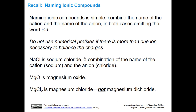Magnesium chloride illustrates another point. Here we have our magnesium cation. We require two chloride anions to balance out that charge, so this is the correct formula — two chloride anions, one magnesium cation — but we still just call it magnesium chloride. We do not call it magnesium dichloride. That would be incorrect. We don't need to tell people they need two of them, because they already know they have to balance the charges. Saying magnesium dichloride would actually be very redundant.